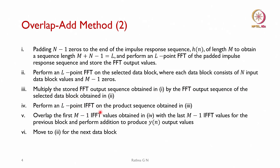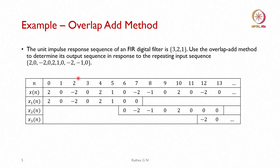We multiply the stored FFT of the impulse response with the FFT of the input block, since multiplication in the frequency domain corresponds to convolution in the time domain. Then we perform an L-point IFFT on the product sequence. Finally, we overlap the first m minus 1 values obtained from the IFFT with the last m minus 1 values of the previous block and add them. We then move to the next data block, performing this in a loop.